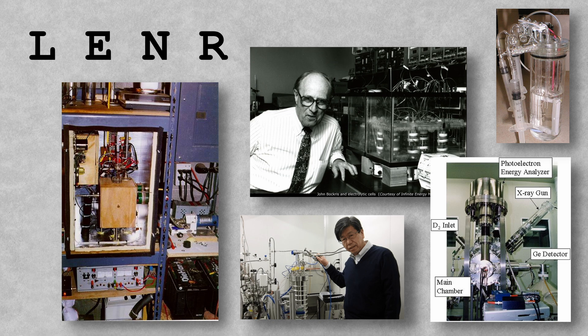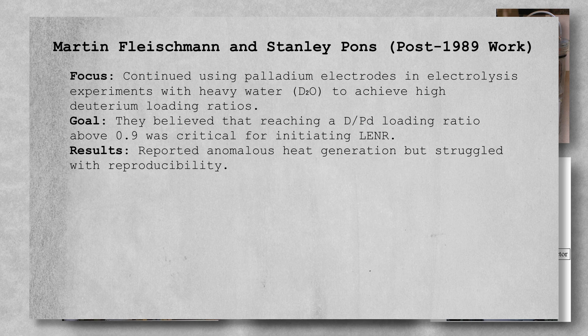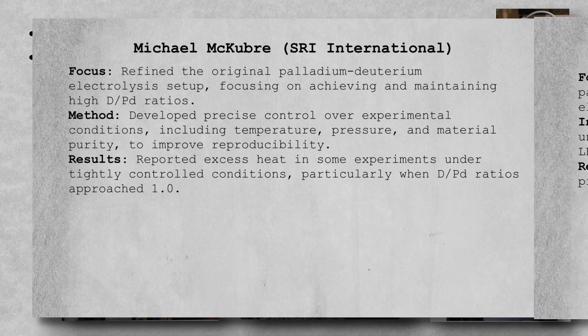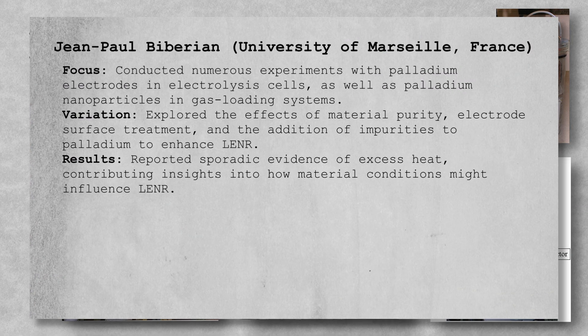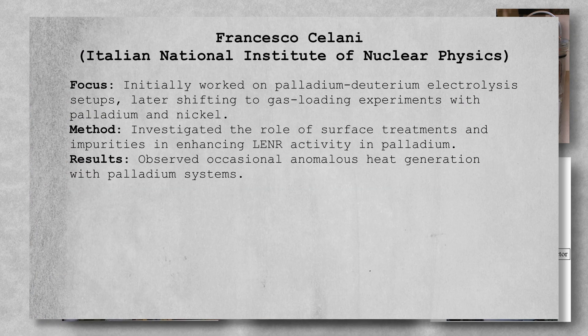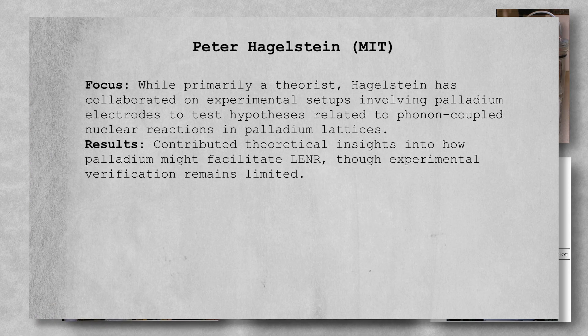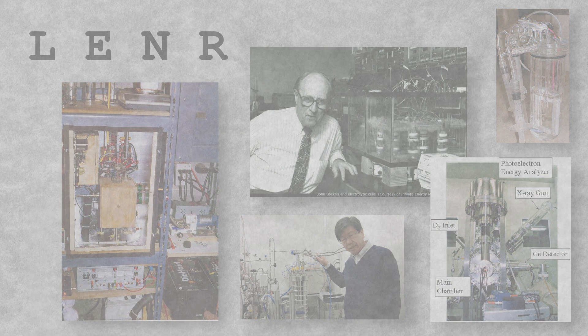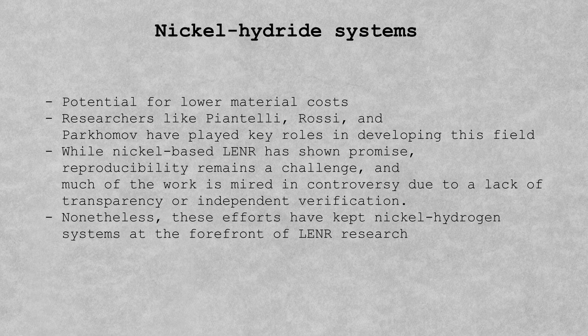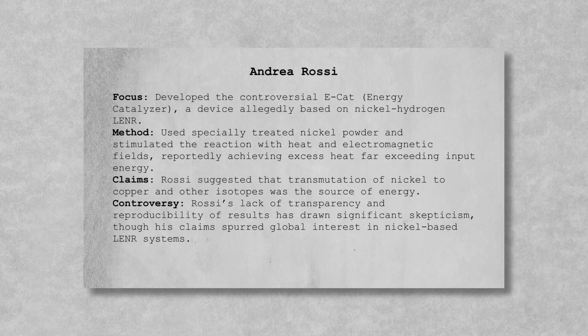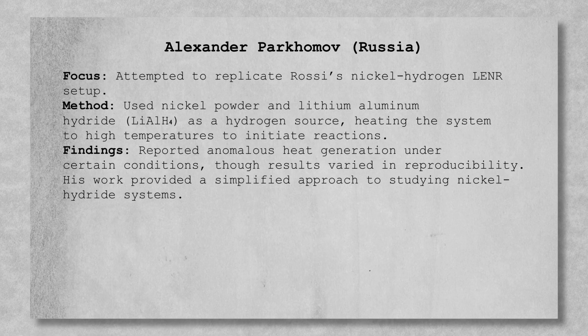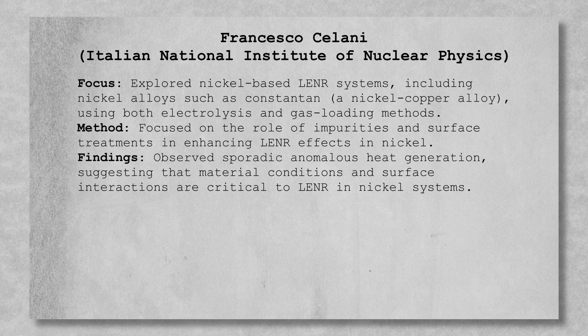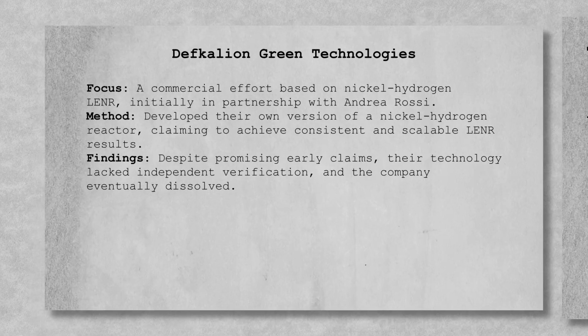In the aftermath of Fleischmann and Pons' controversial announcement, researchers diverged along several paths. Some scientists focused on reproducing the original palladium-deuterium electrolyte experiments, yielding occasional success with evidence of excess heat and helium production under specific conditions. Other researchers began exploring alternative materials and methods. Nickel-hydrogen systems gained attention, particularly after the work of Piantelli and Rossi, who reported excess heat in gas-phase LENR systems.